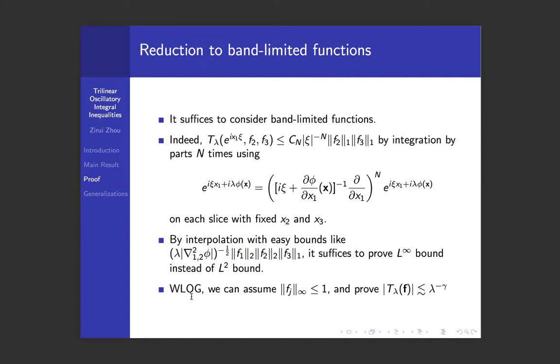Permuting the indices and interpolating with the L^∞ bound will give us the desired L² bound. So from now on, we can assume f_j is L^∞ and we shall assume their L^∞ norms are less than or equal to 1. And our goal now is to prove the L^∞ bound instead of the L² bound. We sometimes will write down the L^∞ norm term to make our calculation a little bit clearer to see.